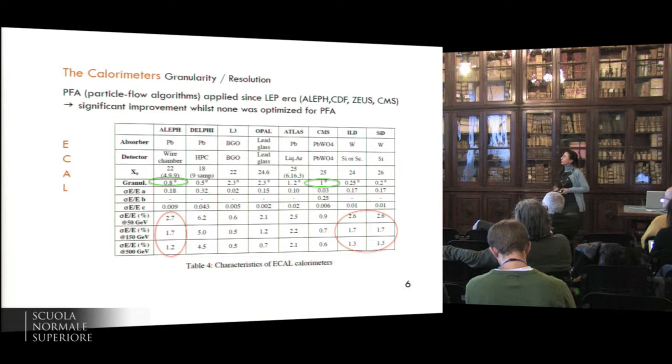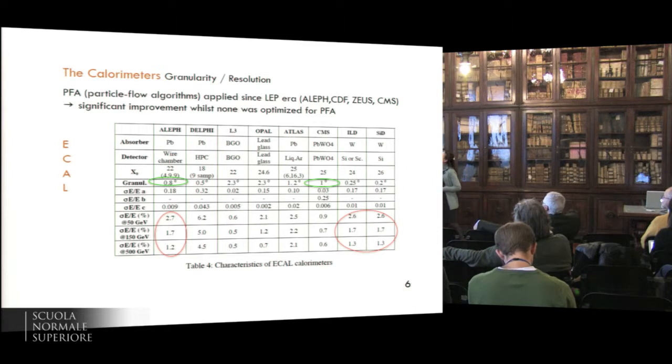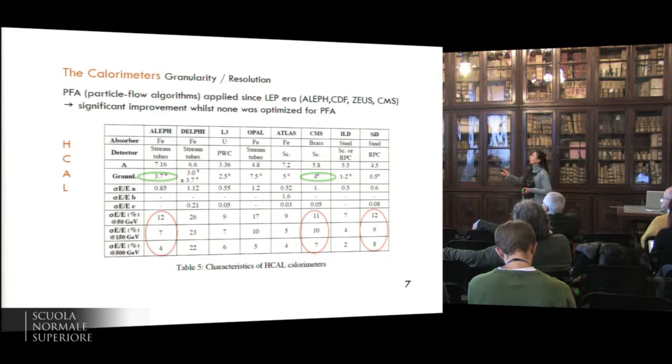For the calorimeters, the particle flow algorithm has been successfully used since the LEP era, bringing significant improvement in the jet energy resolution, while none of this detector was optimized for using the particle flow. And I would like you to notice two numbers. If we look at the granularity for ALEF and for CMS, we see that ALEF has a better granularity than CMS, although CMS has been used to build a TLEP physics case. And if we look at the resolution from 50 GeV to 500 GeV, we see that ALEF compares well with the resolution that is expected for the LHC experiments.